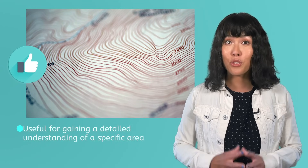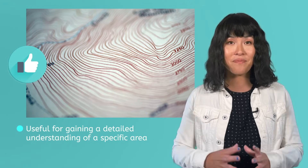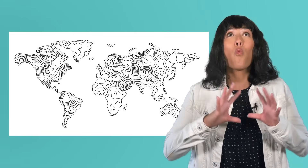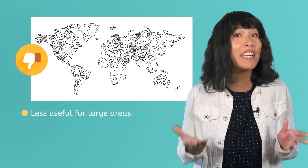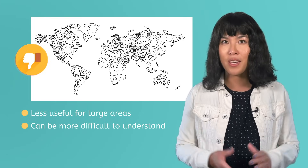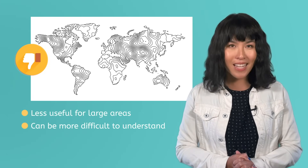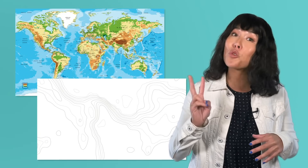Topographic maps are often labeled with exact measurements that tell the elevation of the area they show. That makes these maps useful for Earth scientists who need a detailed understanding of the landscape of a specific area. But a topographic map of the entire world would have way too many contour lines to really be useful, which is why larger areas are usually shown using relief maps instead. Topographic maps also take a little more training to use, but they're still an important way of mapping landscapes. These two kinds of maps help Earth scientists take our three-dimensional world and show details about its landforms in a two-dimensional way.